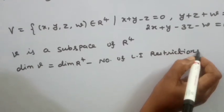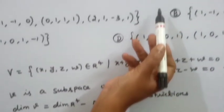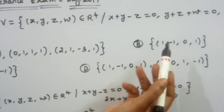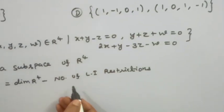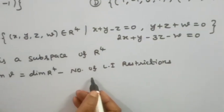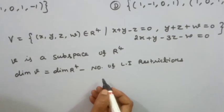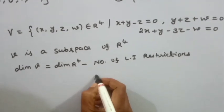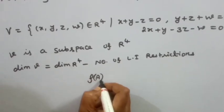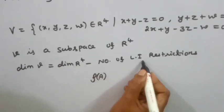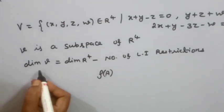The number of linearly independent restrictions is found by forming the coefficient matrix and computing its rank. The rank gives us the number of truly independent conditions among the three given equations.